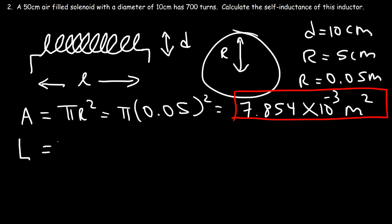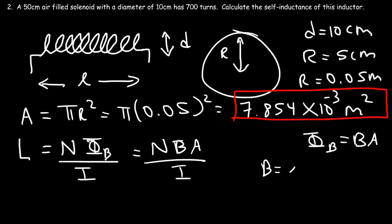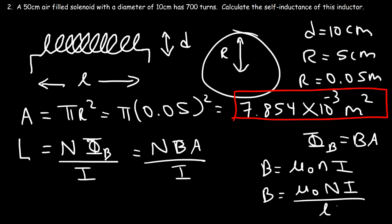To calculate the self-inductance, we use: L equals N times the magnetic flux divided by the current. The magnetic flux equals the magnetic field times the area, giving N times B times A divided by I. The magnetic field of a solenoid is mu-zero times n times I, where lowercase n is the number of turns per unit length, which equals capital N divided by the length of the solenoid. Substituting B gives L equals mu-zero N squared times A divided by the length.